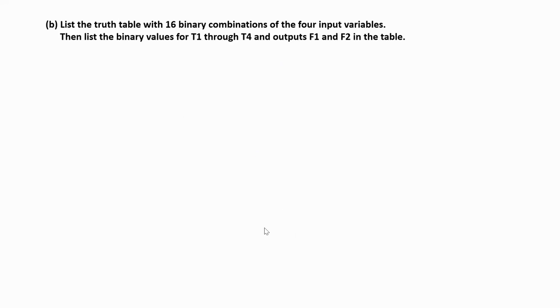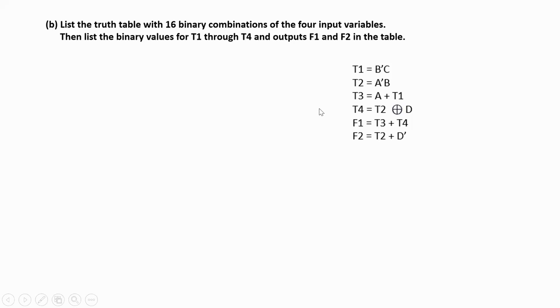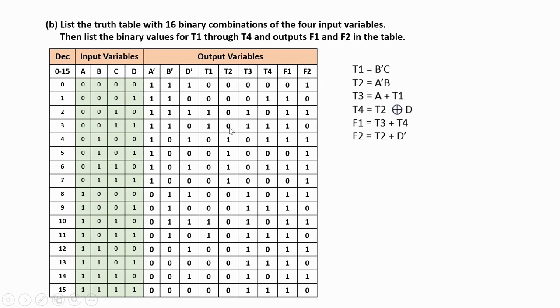Next is part b: list the truth table with the 16 binary combinations of the four input variables, then list the binary values for t1 through t4 and outputs f1 and f2 in that table. Now let us prepare the truth table using 16 binary combinations.